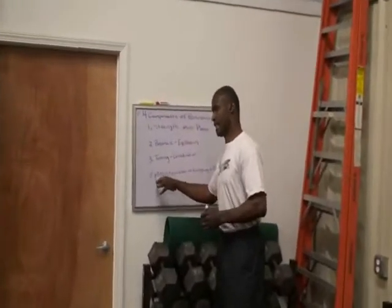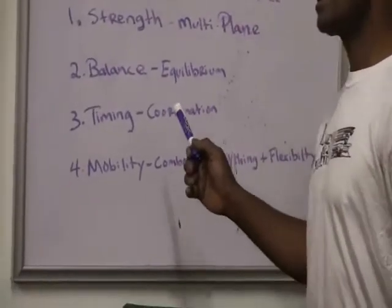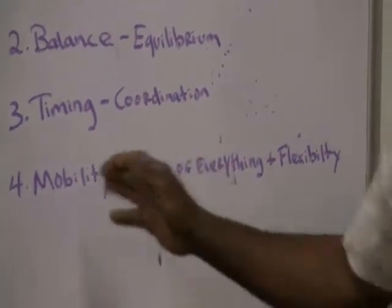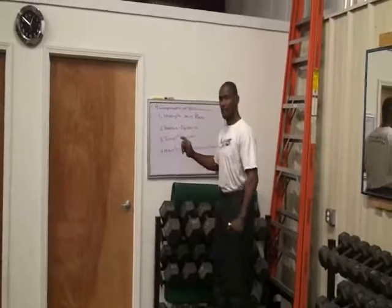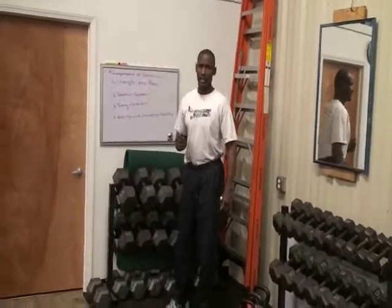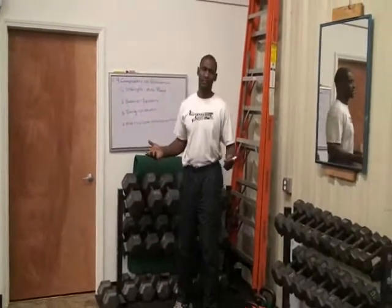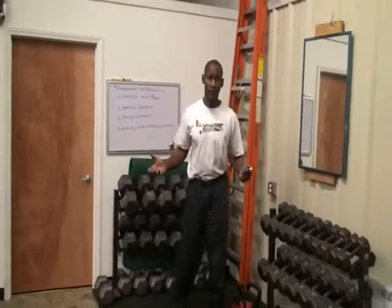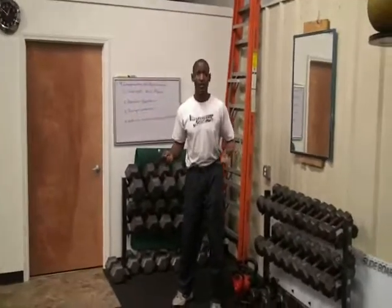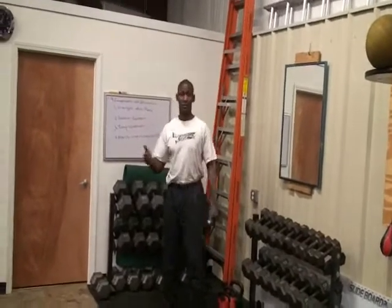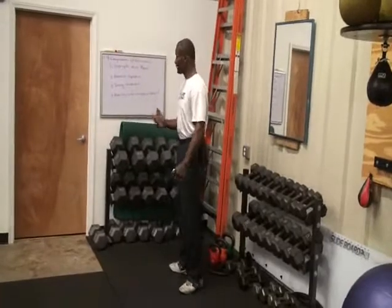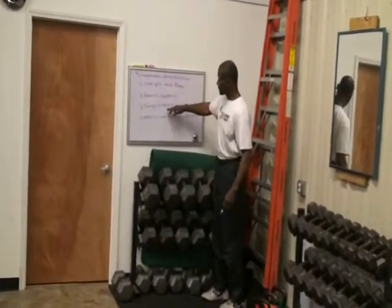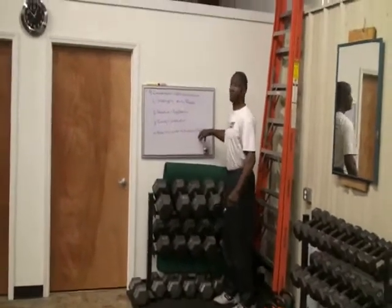The next component is mobility. This is an important one. Some people confuse mobility and flexibility — you can be flexible without necessarily being mobile. Mobility is really the ability of timing, balance, strength, and flexibility all thrown in there. A person who does a lot of yoga has great flexibility, but in an athletic setting their mobility is not very good because they lack strength to change directions, strength when it comes to landing, and strength for dynamic explosive movements. Mobility is a combination of timing, balance, and strength with flexibility thrown in.